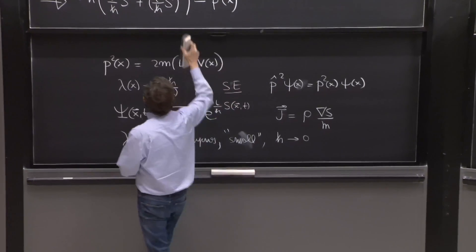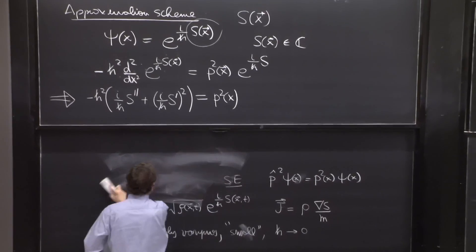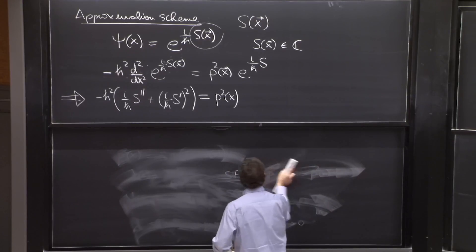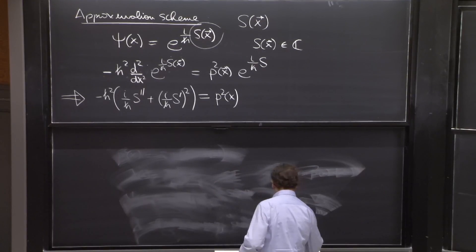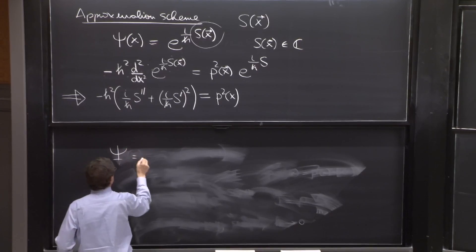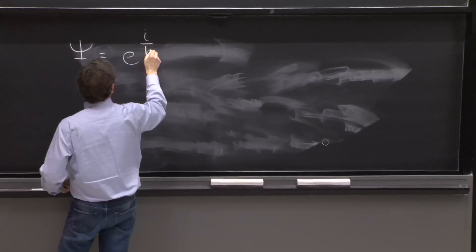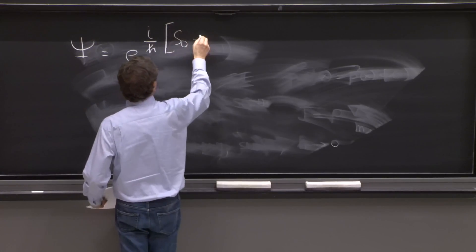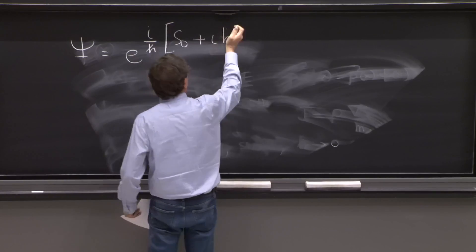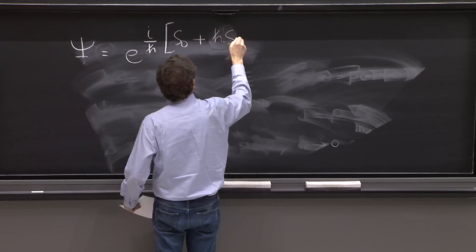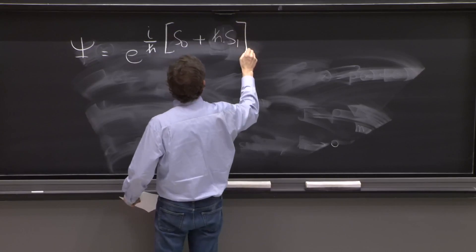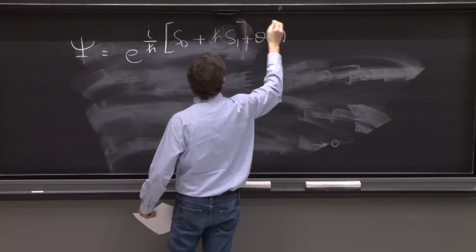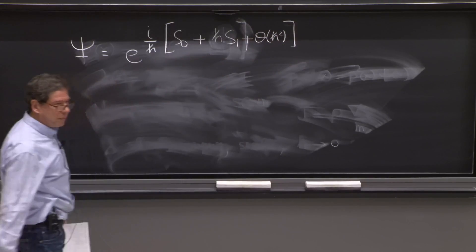That's not hard. We wrote the answer up there. So the wave function is e to the i over h bar times s. And s is what we have there. So our wave function is e to the i over h bar s. And s was s0 plus h bar s1. There's more, is that right? But we're going to ignore it. We didn't go that far. In fact, nobody goes higher in the WKB approximation.